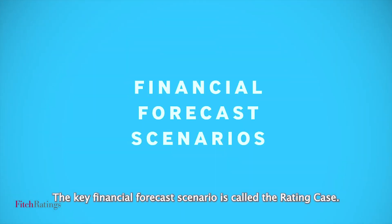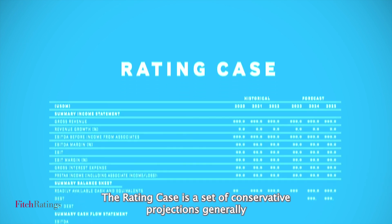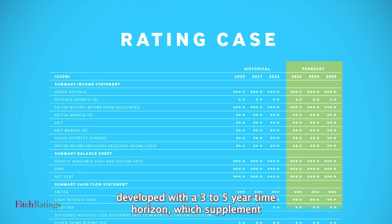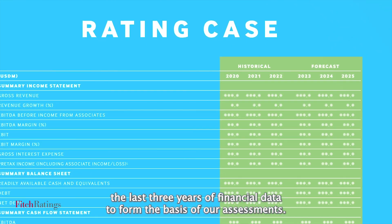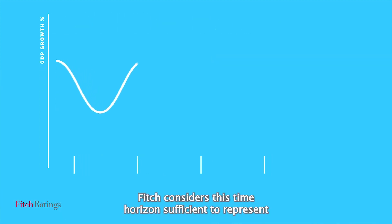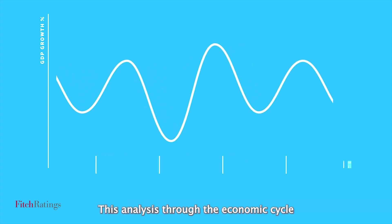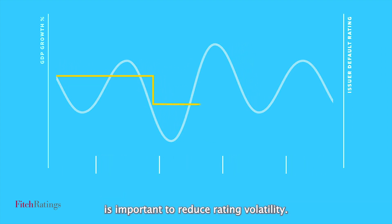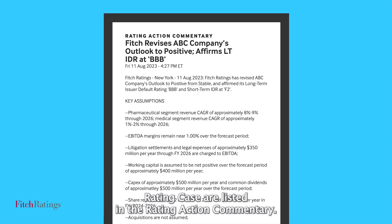The key financial forecast scenario is called the rating case. The rating case is a set of conservative projections generally developed with a three- to five-year time horizon, which supplement the last three years of financial data to form the basis of assessments. Fitch considers this time horizon sufficient to represent one typical economic cycle of the issuer under review. This analysis through the economic cycle is important to reduce rating volatility. The key assumptions applied in each rating case are listed in the rating action commentary.